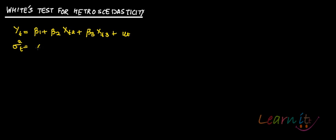You will say it is Sigma squared T would be Alpha1 plus Alpha2 Xt2 plus Alpha3 Xt3. So, same variables from above, then the squared terms of these two variables.